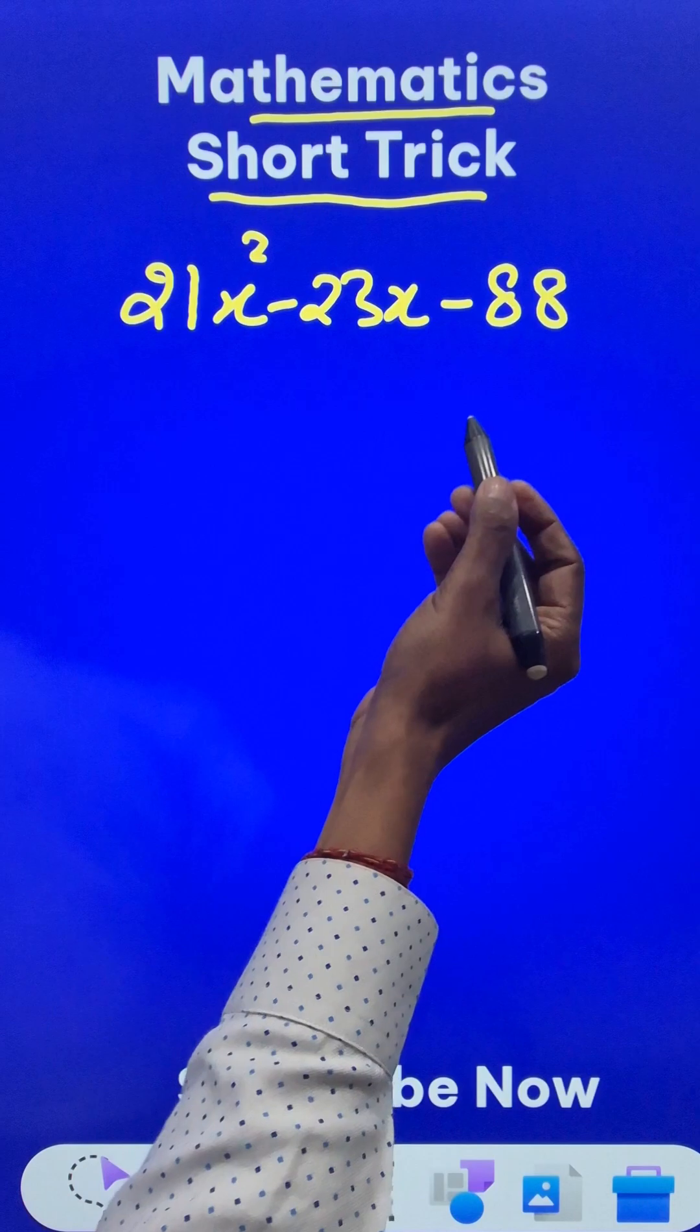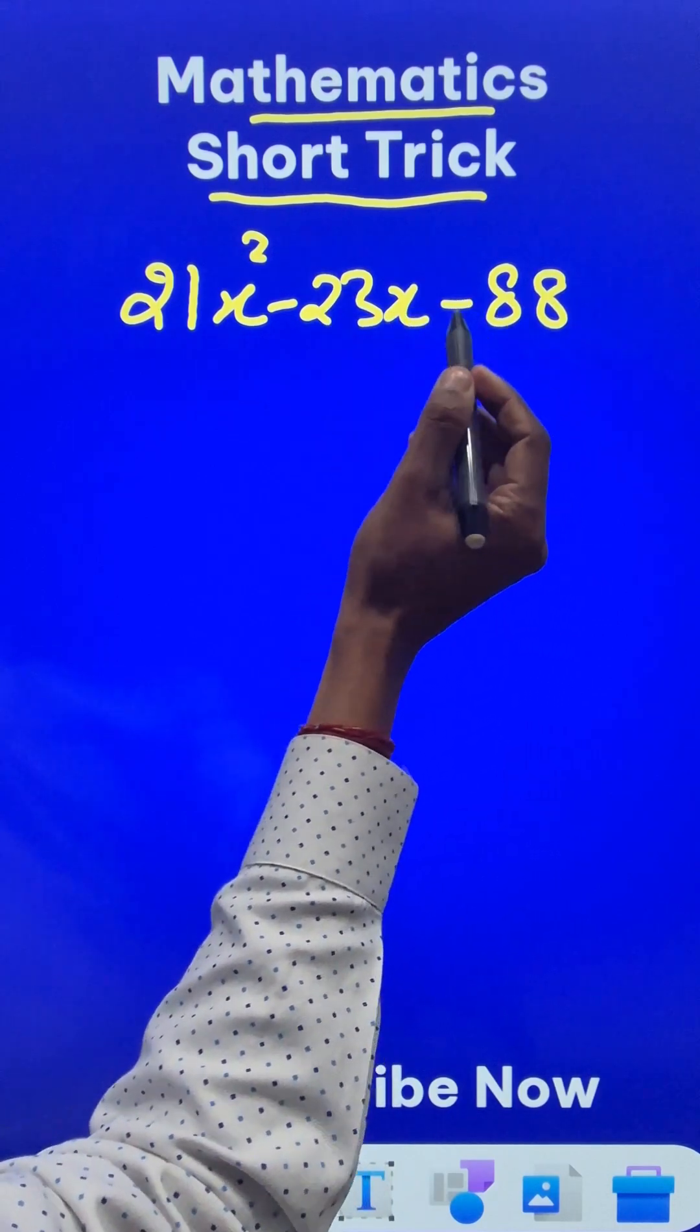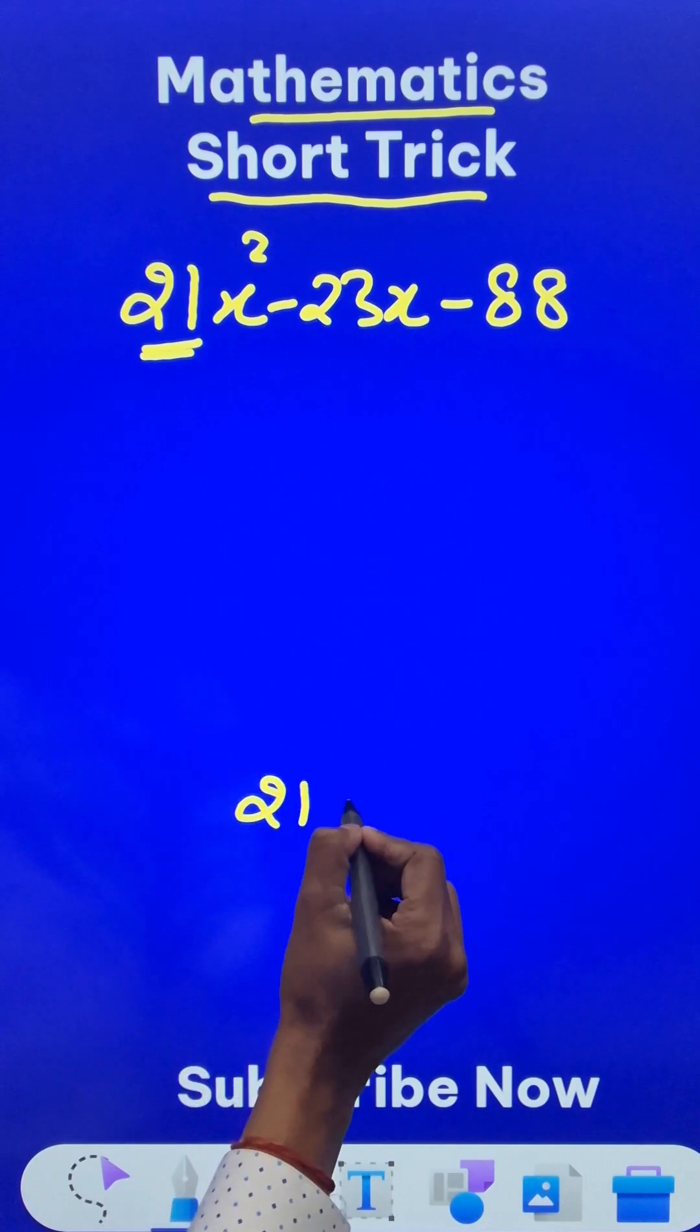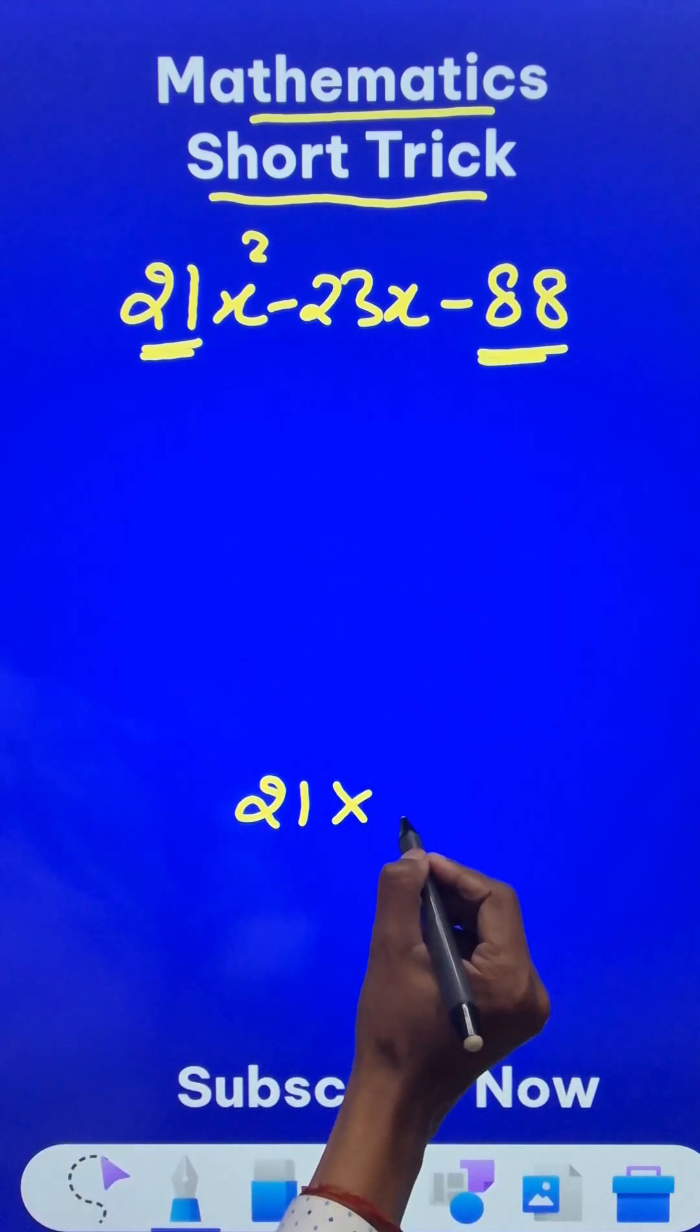The coefficients are huge, right? So splitting of middle term becomes so difficult. Let's take the first number here, 21. So I'll write it here, 21, and times the last coefficient that is negative 88.